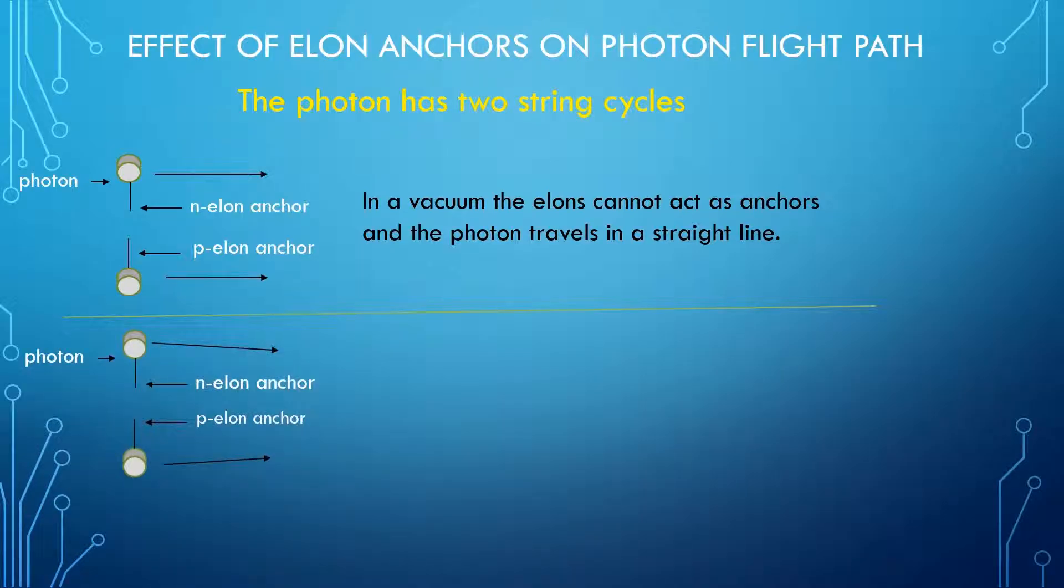However, when traveling in a denser medium such as glass, there will be a slight tendency to zigzag in flight. In this diagram, the N elons will cause the photon to turn a little to the right and the P elons to the left. For this reason, there will be a tendency for the photon to zigzag as it travels through glass.